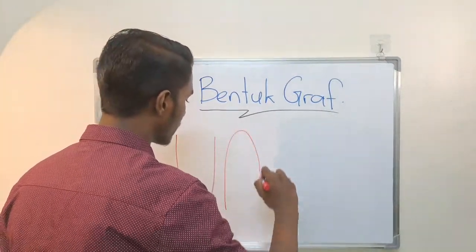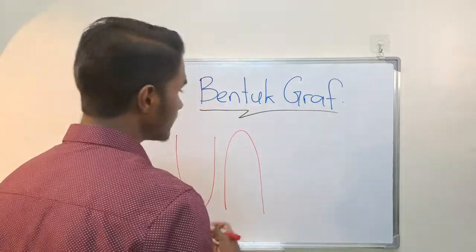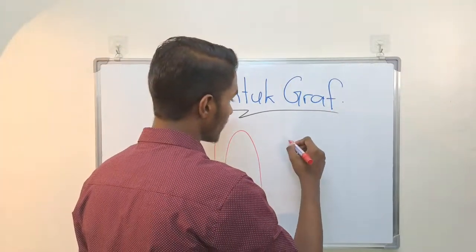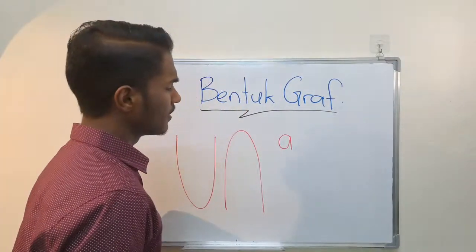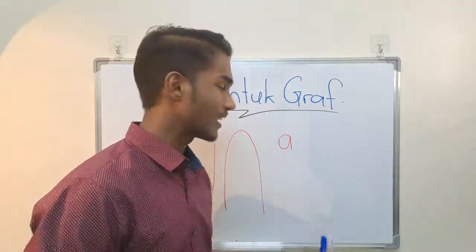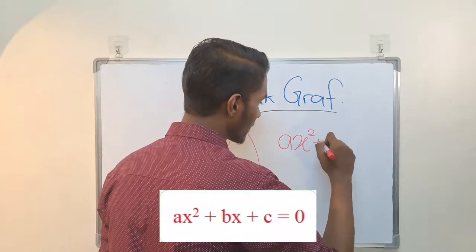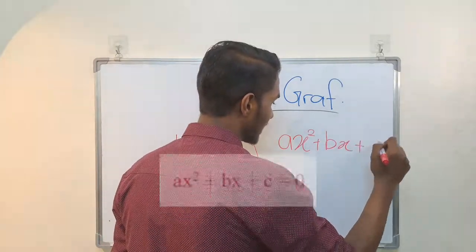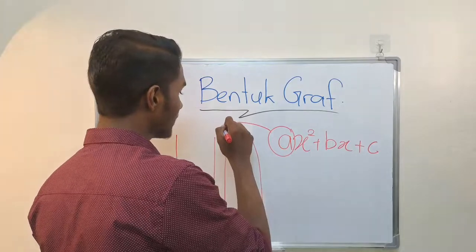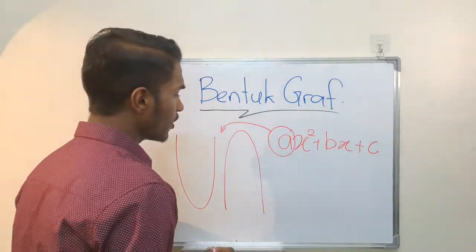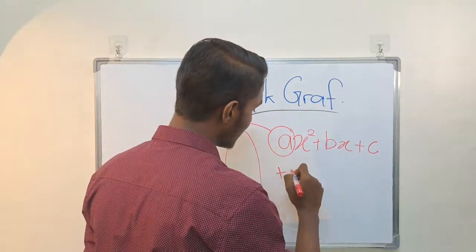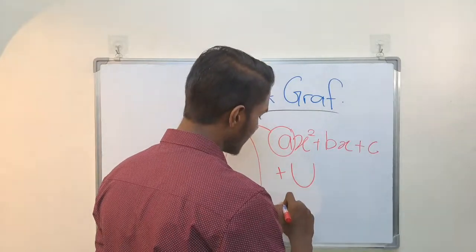How do we find the a value? What is the value of a in ax² plus bx plus c? The a value determines the shape. Positive value gives upward curve and negative value gives downward curve.